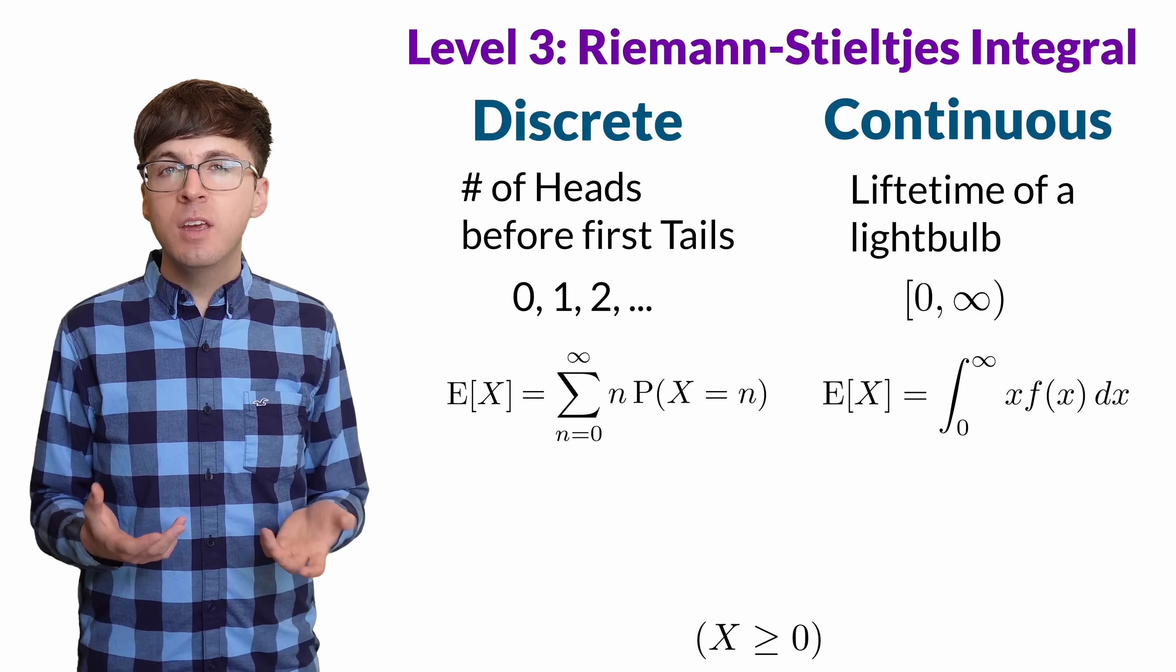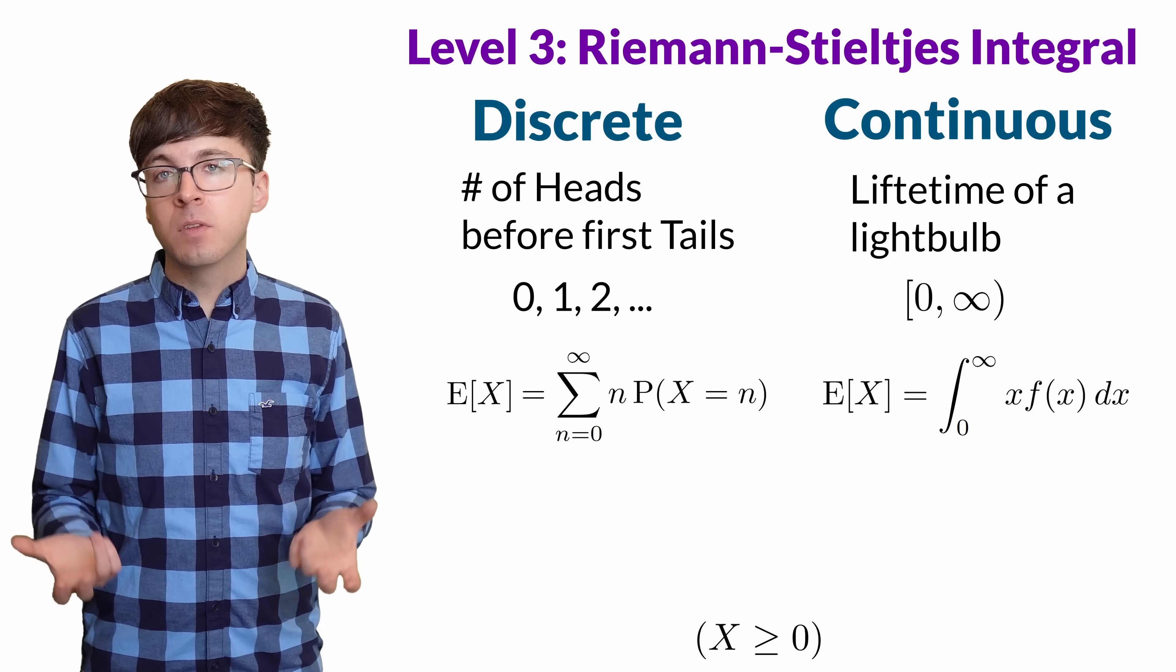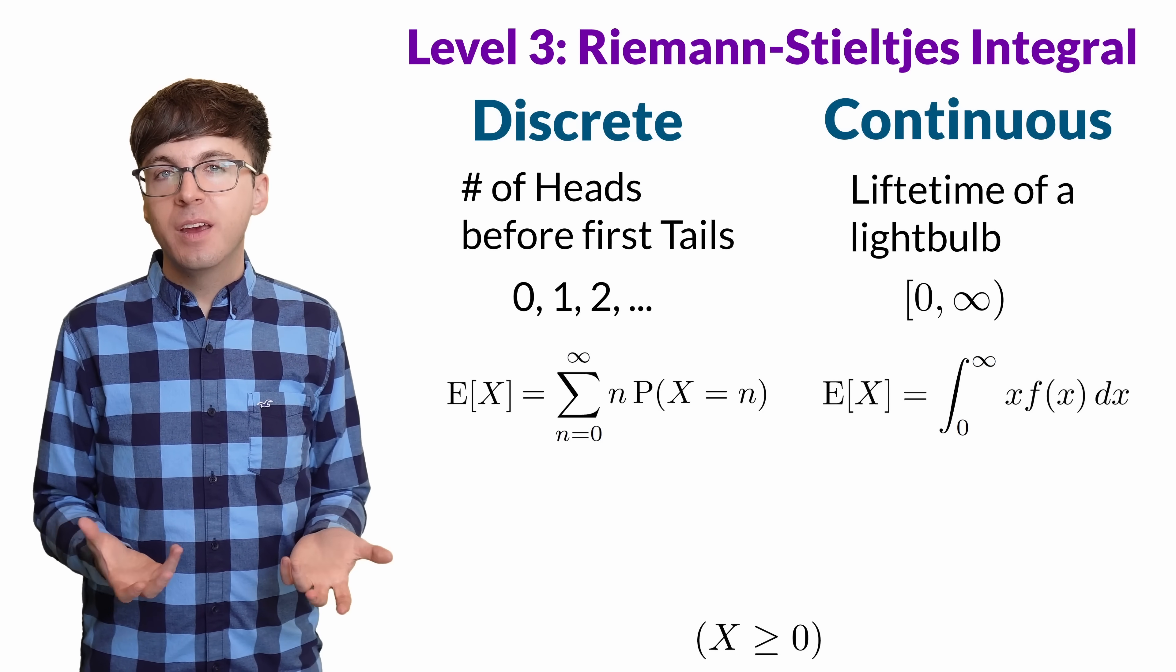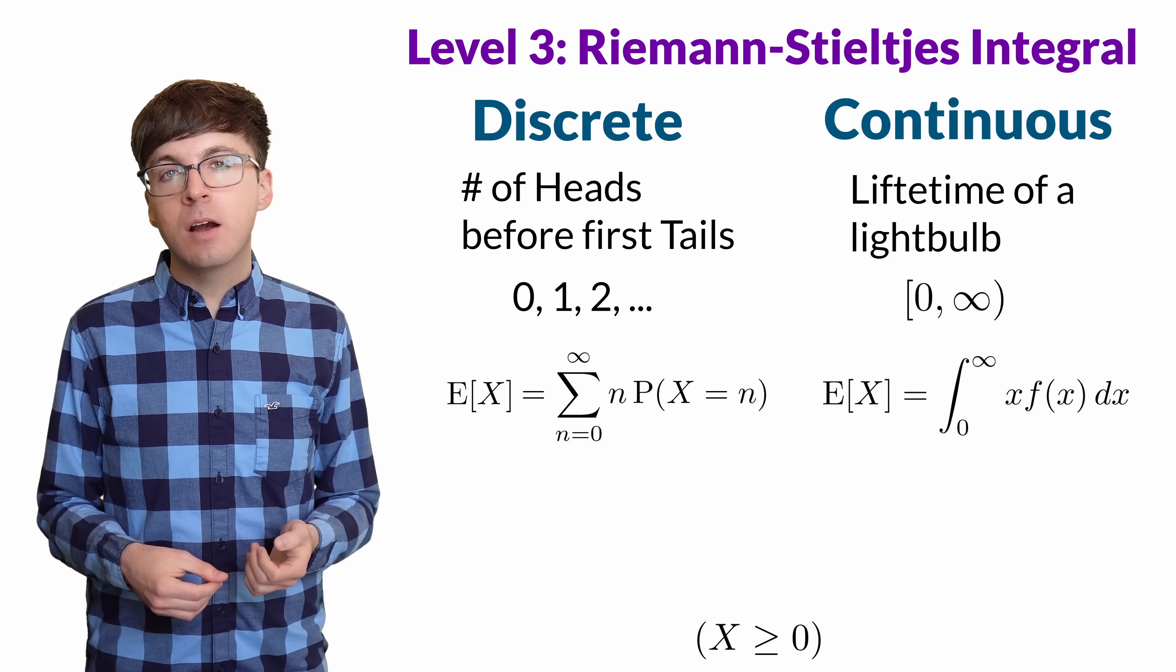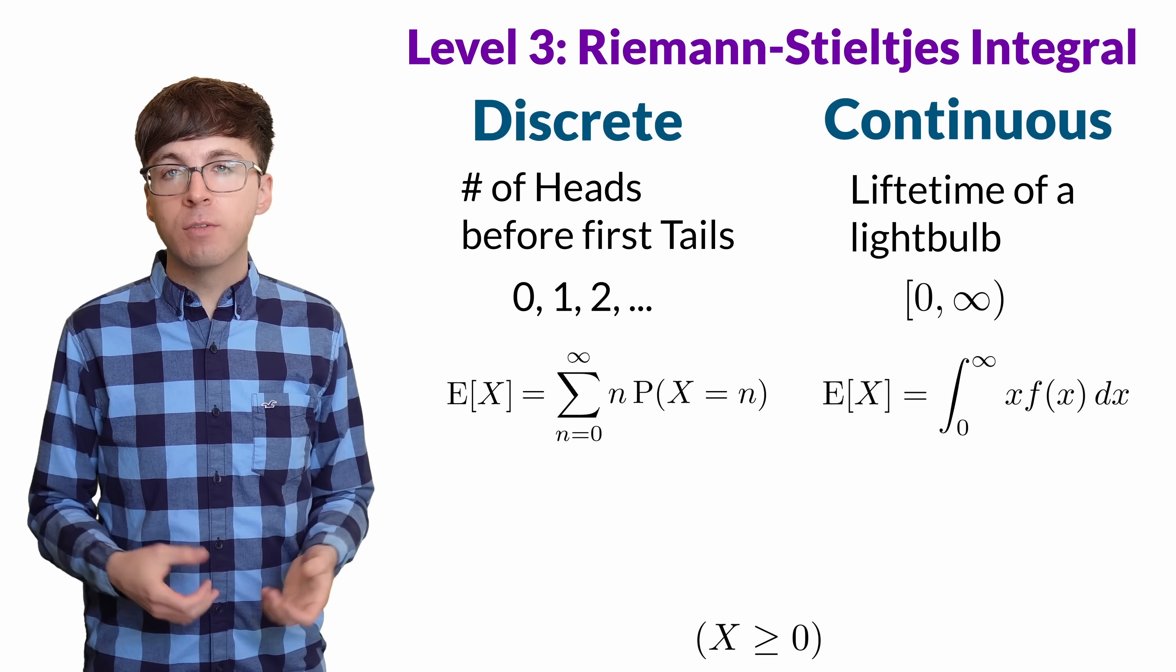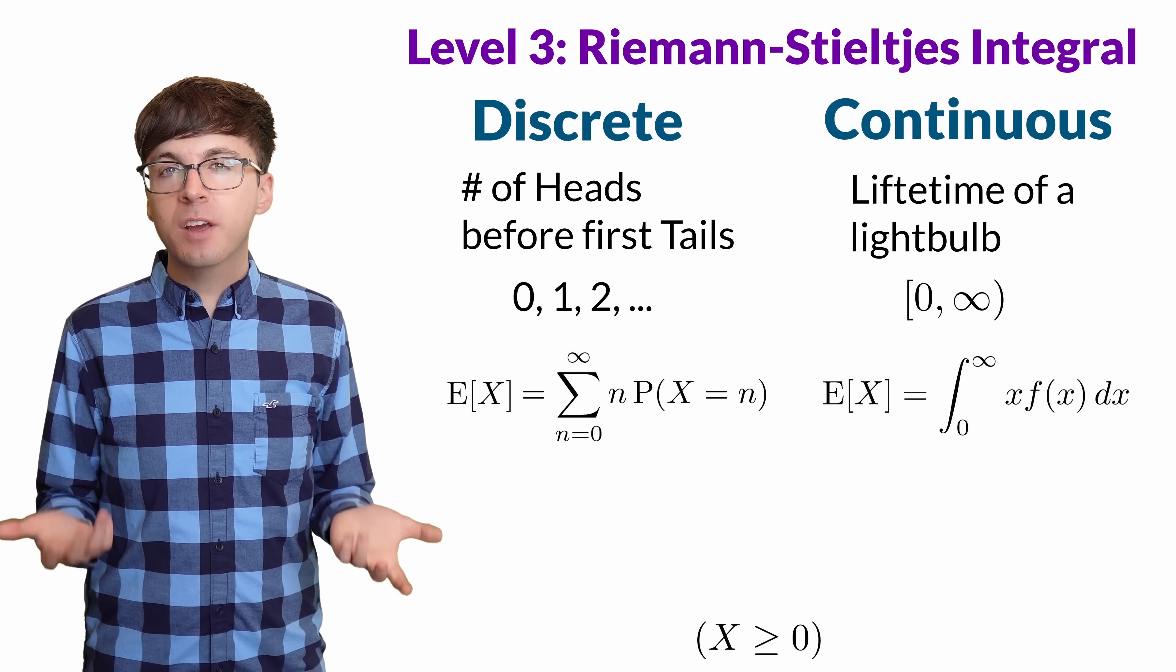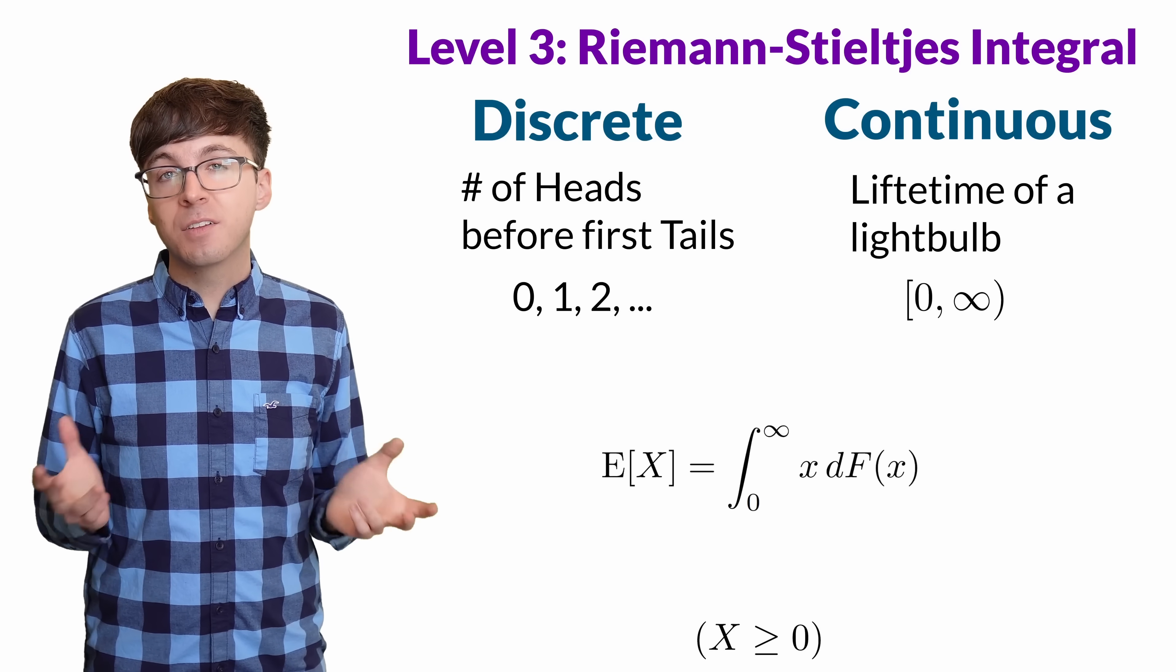To get the expectation, we integrate x times the density function. Why are there two different rules for this? Well it's because the integrals we learn in calculus can't handle discrete random variables. But if we use Riemann-Stieltjes integrals, then the two expectation formulas look exactly the same.